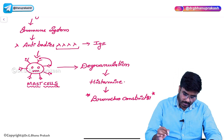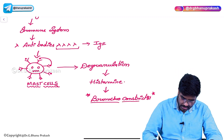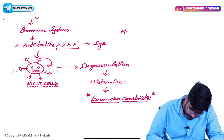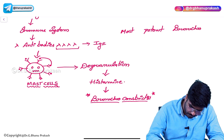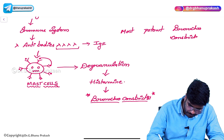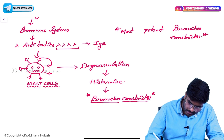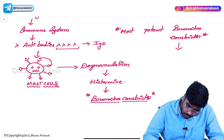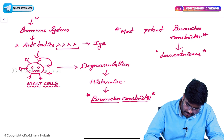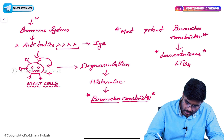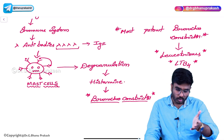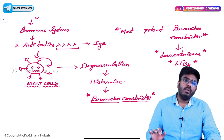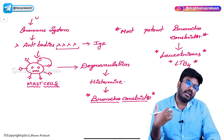Histamine causes bronchoconstriction, but if someone asks you what is the most potent bronchoconstrictor — is it histamine, prostaglandin, or leukotriene — the answer is leukotriene, specifically LTB4. Leukotrienes are the most important bronchoconstrictors. The mast cell will also release leukotrienes after histamine.